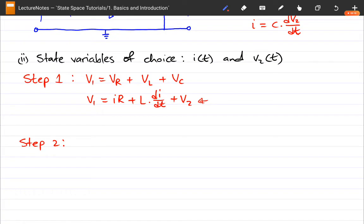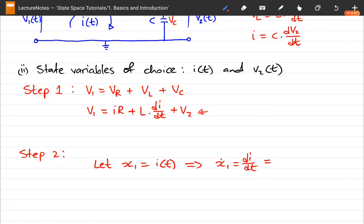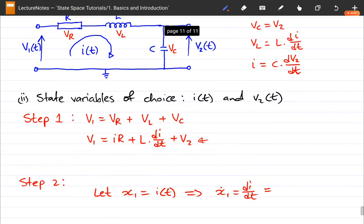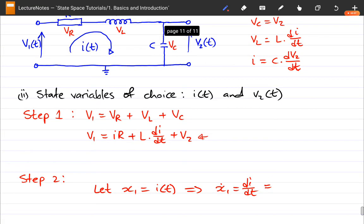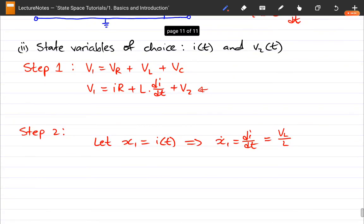Now step two says we need to select our state variables, but we have them selected so we can just point them out. So let X1 be the current I of T, which would imply that X1 dot is going to equal dI/dt. And I think we can already see that the dI/dt exists up there in this equation, and we can point it out that dI/dt is actually VL over L. VL over L, that's worth noting for the time being.